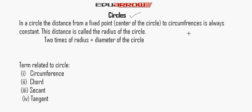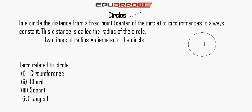By this figure you can understand. This is a circle and this is the center of the circle. This is the radius of the circle. Radius is always constant in a circle, and it is represented by small r.